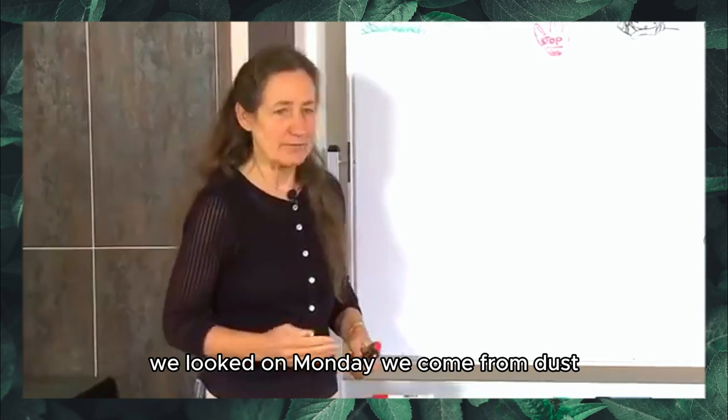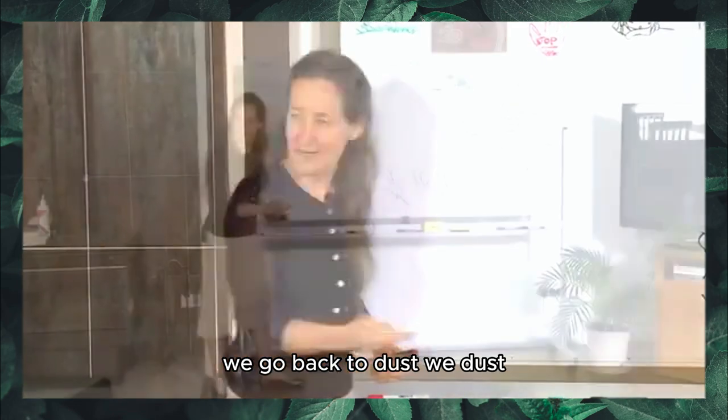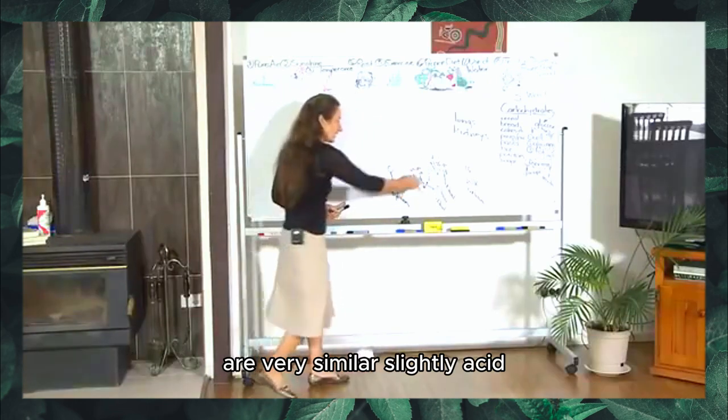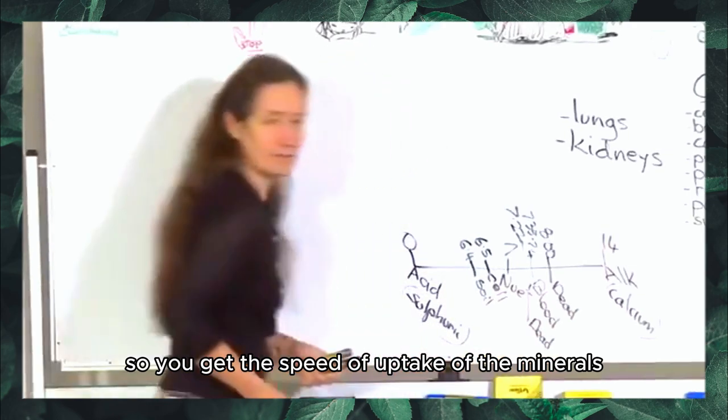The gardener is always testing his soil and he aims for a pH of 6.4. We looked on Monday, we come from dust, we go back to dust, we're dust. It's interesting that the pH of the cell and the soil are very similar. Slightly acid, so you get the speed of uptake of the minerals.